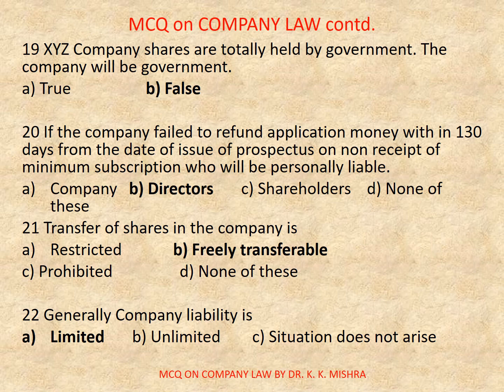Question number 21: Transfer of shares in a company is — Options are: A) Restricted, B) Freely transferable, C) Prohibited, D) None of these. Correct option is B, Freely transferable.